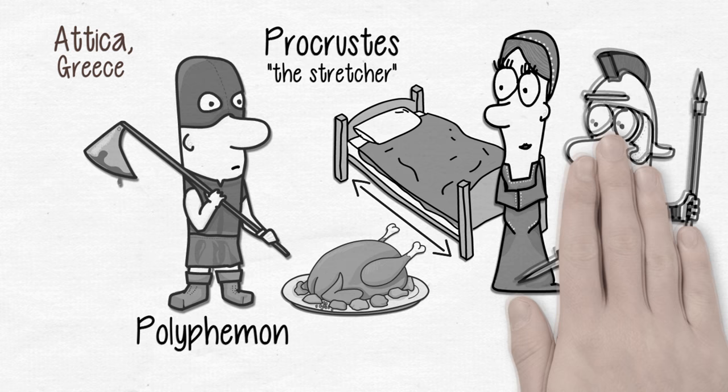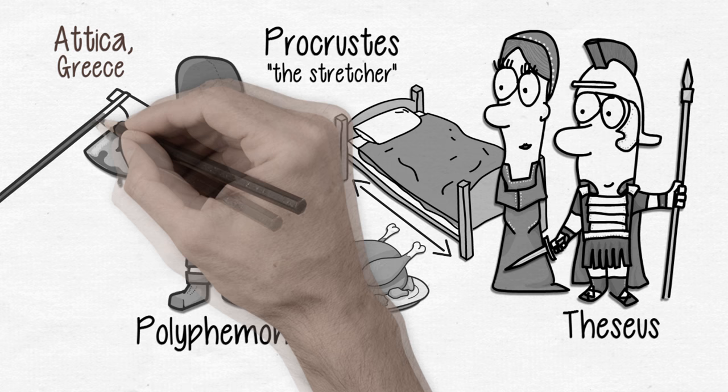One day Theseus, the hero of this little story about justice, came around and flipped the script on Procrustes, decapitating him using his very own method.